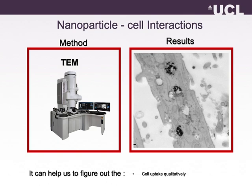TEM analysis is good for gold nanoparticles because they are electron dense and you can visualize them, but some particles are not electron dense and cannot be visualized. If your particles are fluorescent, you can use confocal microscopy to visualize cell uptake. It is also a qualitative technique — it goes through cell sections and won't give you a complete picture of what is happening, but you can choose which cells you want to image.